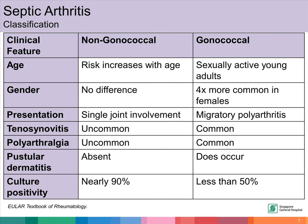One useful way to classify septic arthritis is to classify it into non-gonococcal and gonococcal type. Non-gonococcal septic arthritis increases with age, but gonococcal-related septic arthritis usually happens in sexually active young adults. Gonococcal septic arthritis also happens four times more commonly in females. It usually involves a polyarthritis that is migratory in nature. Tenosynovitis and polyarthralgia is also more commonly seen in gonococcal-related septic arthritis. Pustular dermatitis can also be seen in gonococcal septic arthritis, but is absent in non-gonococcal-related septic arthritis. The joint fluid culture is positive in 90% of non-gonococcal septic arthritis, but positive in less than 50% of cases of gonococcal septic arthritis.